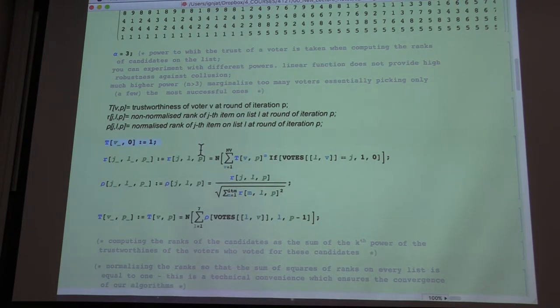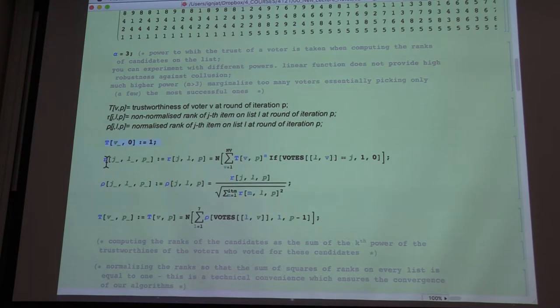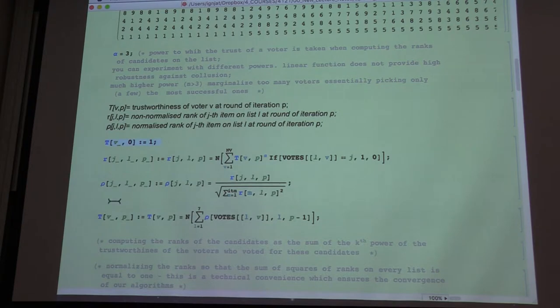So each voter gets initial trust equal to one. So when he votes with initial trust equal to one, of course, then the ranks, the scores of each item,